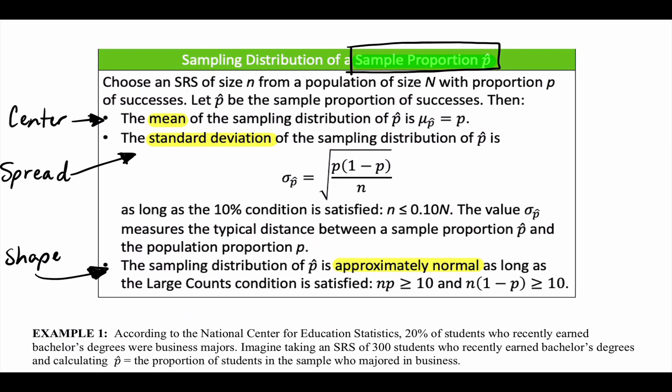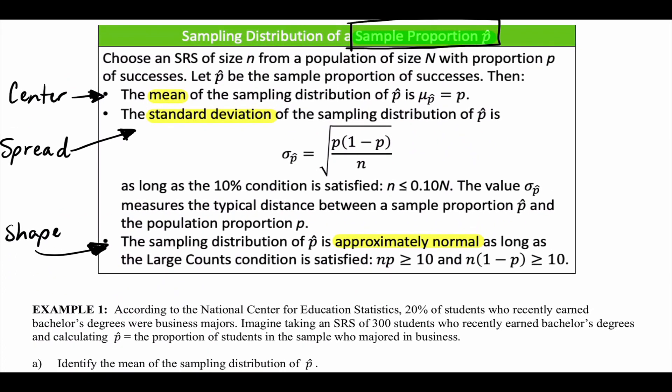The last thing is shape. They're approximately normal if n times p is greater than or equal to 10, AND n times (1 minus p) is greater than or equal to 10. n is the number in the sample and p is the true proportion. Multiply those two numbers — if it's bigger than 10, you're good. Do the same for n times (1 minus p). If it's still bigger than 10, you're good. It's approximately normal.